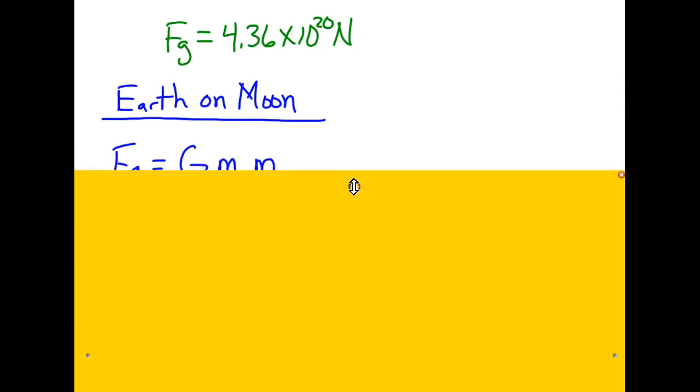We now have to calculate the force of gravitational attraction between the Earth and the Moon. To do that, similar calculation but with different values. Big G, mass of the Earth, mass of the Moon, divided by the distance between the Moon and the Earth squared.